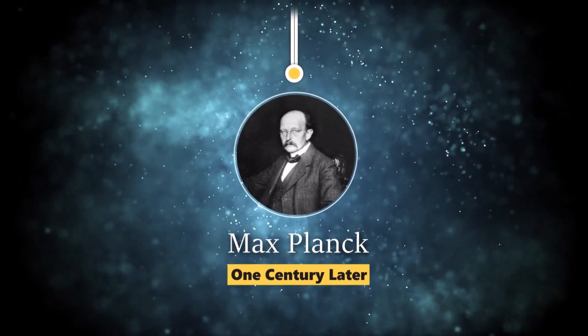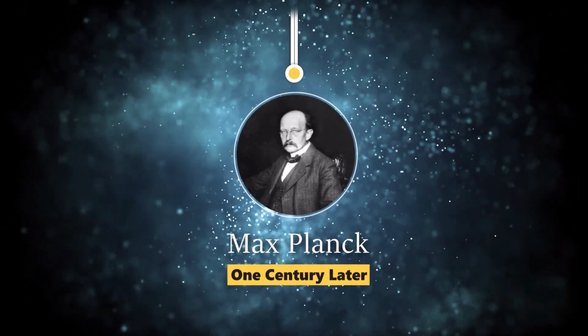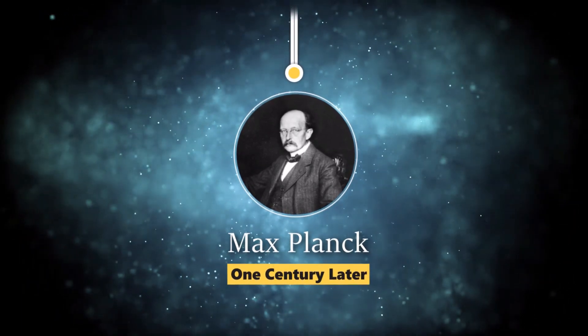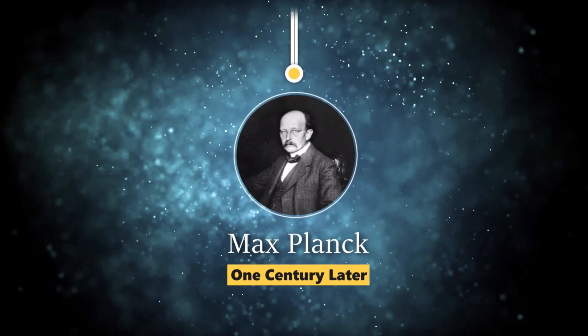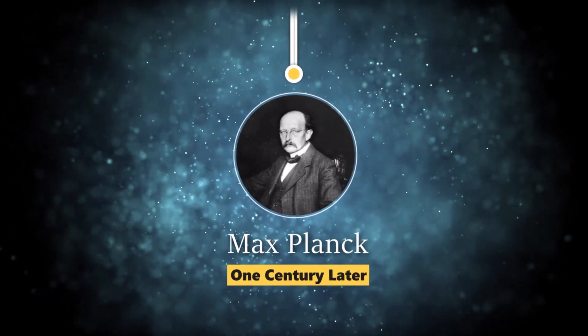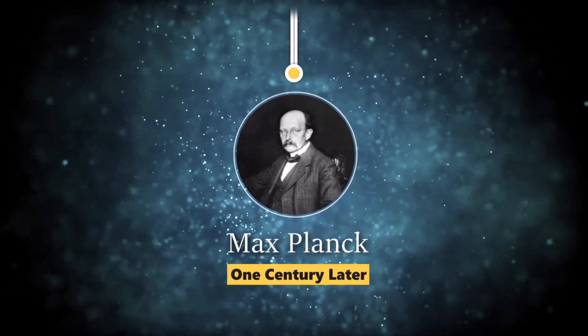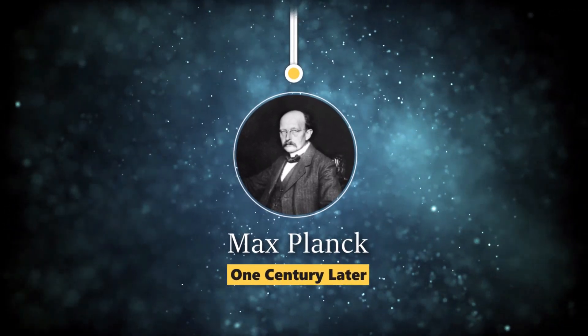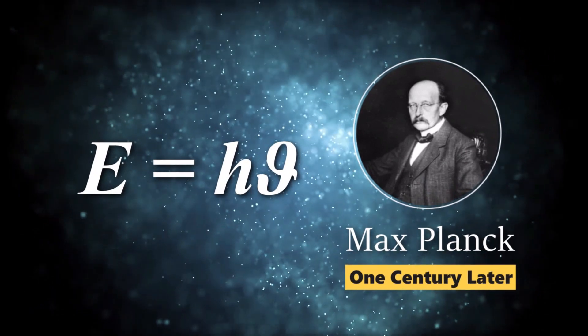One century later, Max Planck formulated his idea of emission of light to solve the problem of thermal equilibrium of an absolutely black body. He found that the energy of light should be quantized, and in his experiments the energy formula of each packet, which he called photon, is h nu.